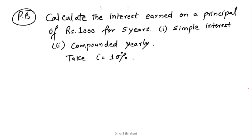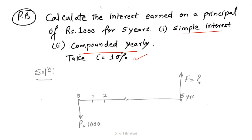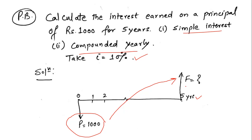Now let's calculate and understand what will be the interest earned using simple interest and compound interest. The problem says: calculate the interest earned on a principal of Rs. 1000 for a 5-year period using simple interest and compound interest at a rate of 10%. This is a cash flow diagram — from 0 to 5 years. At the 0th year, at the start of this period, I am investing Rs. 1000, and I want to know what amount I will receive at the end of the 5th year. The money going out is shown downward (negative), and the amount received is shown upward (positive).